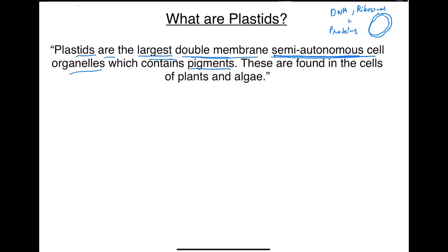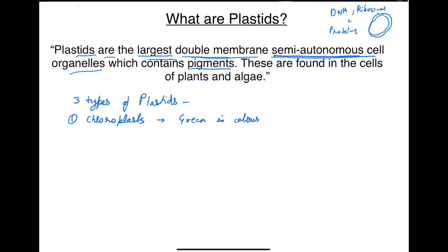Plastids are organelles which have different color pigments, that's why they are called color-containing cell organelles. There are three types of plastids. Number one is chloroplast. These are green colored cell organelles which are present in the leaves of the plant, and they are responsible for photosynthesis — that means they are responsible for manufacturing the food.